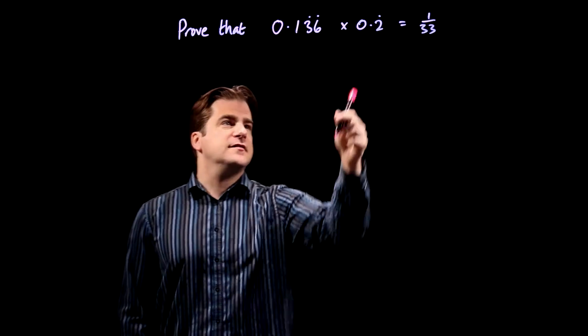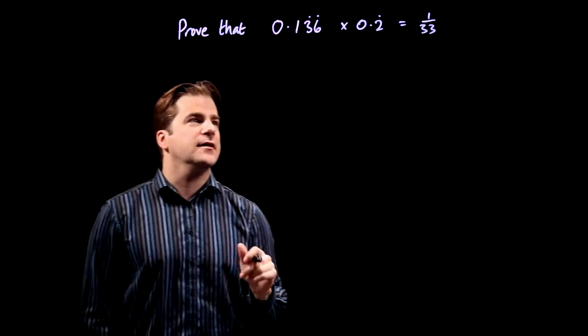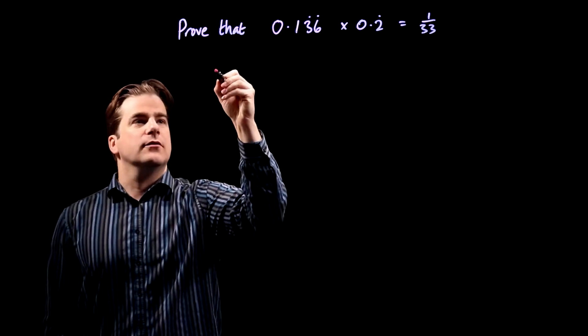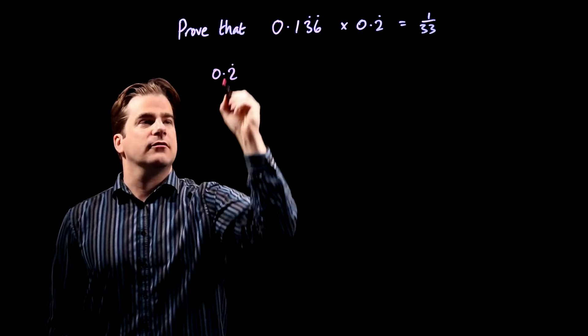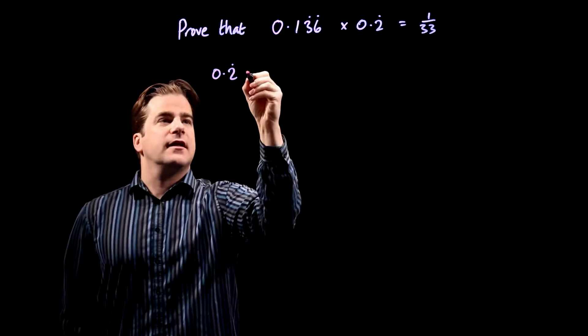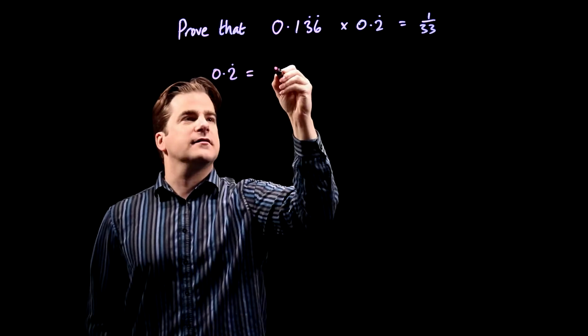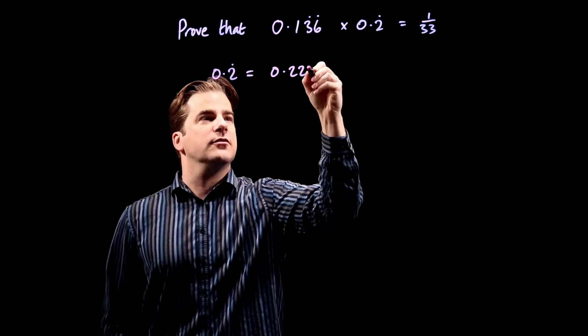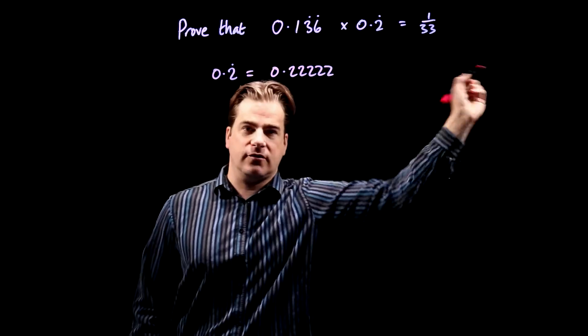So let's start with the 0.2 recurring because that's slightly easier. I'm going to write it as 0.222222 and so on.